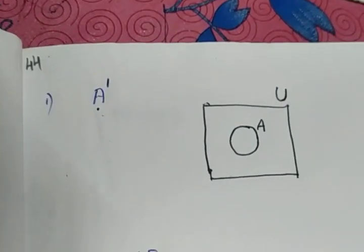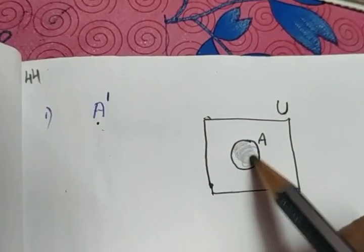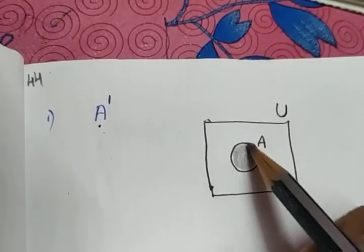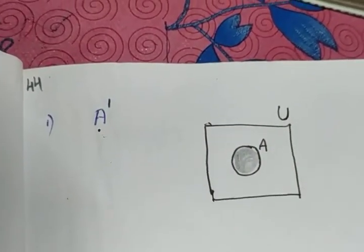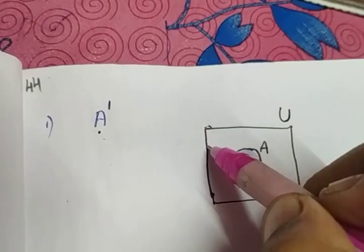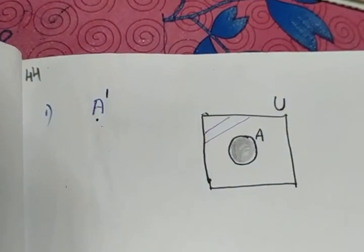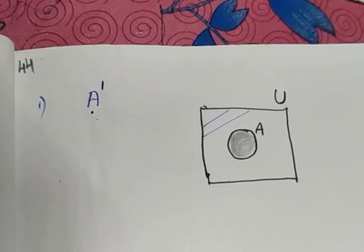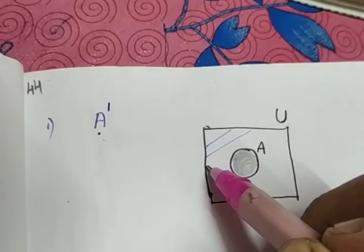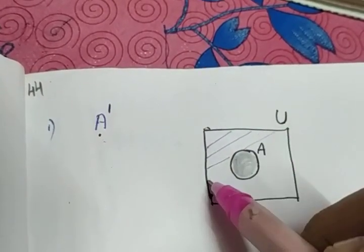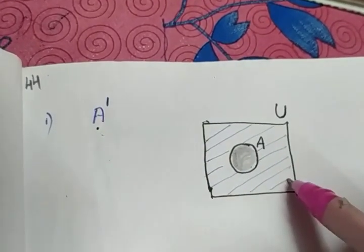The question is to find A dash (A'). The shaded portion I am shading with a pencil represents A — what is inside the circle represents A. A dash contains all the elements in U which are not in A. So A dash will be the region other than A, which means the blue colored shaded line represents the region A dash.